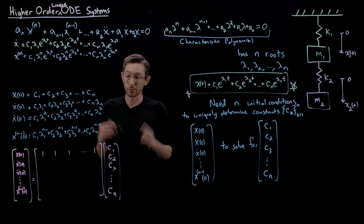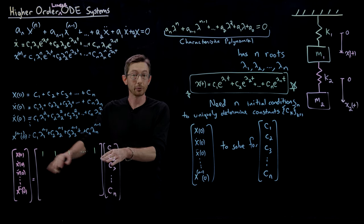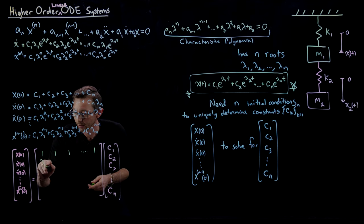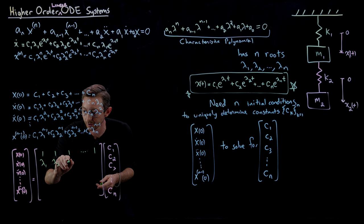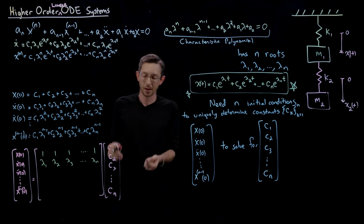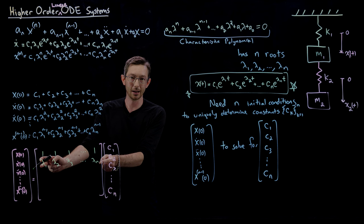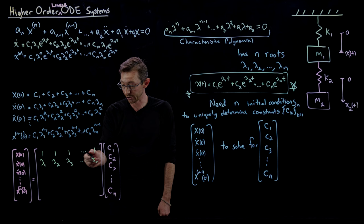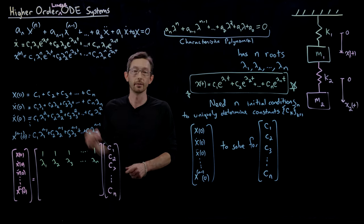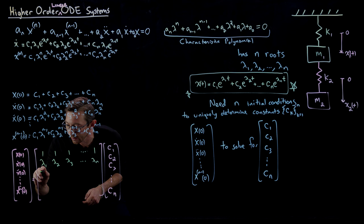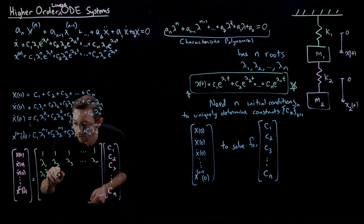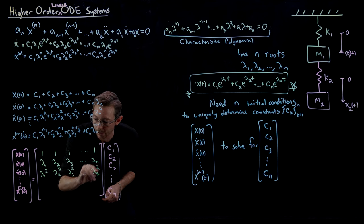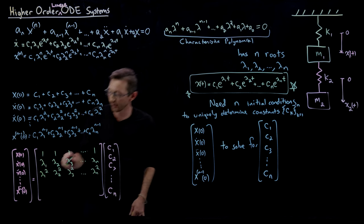My second row is also simple — the coefficients are just λ₁, λ₂, λ₃, so I write down λ₁, λ₂, λ₃, ..., λₙ. That gives me my second equation. My third row is λ₁², λ₂², λ₃², ..., λₙ². And my (n−1)th row is λ₁ⁿ⁻¹, λ₂ⁿ⁻¹, λ₃ⁿ⁻¹, ..., λₙⁿ⁻¹.